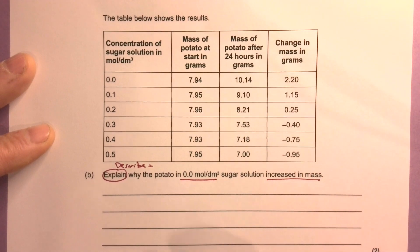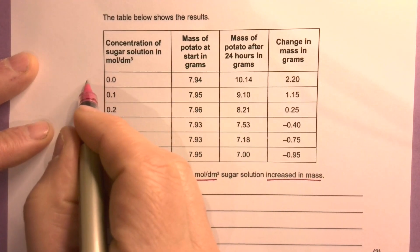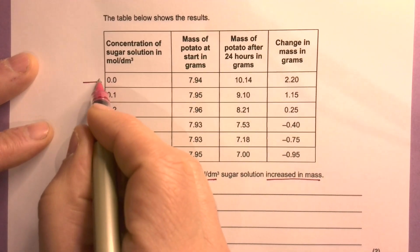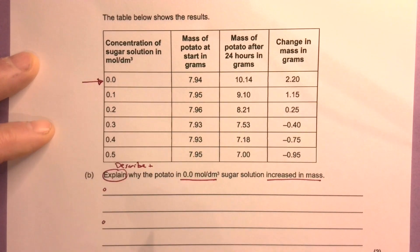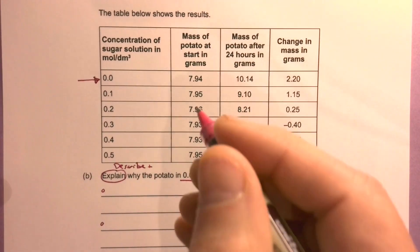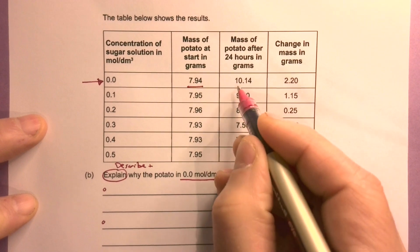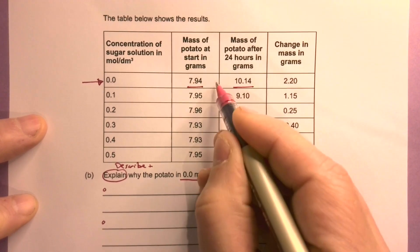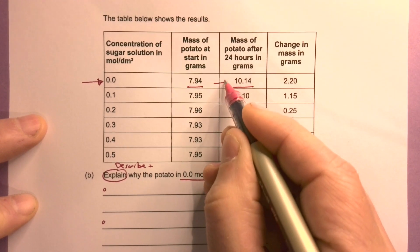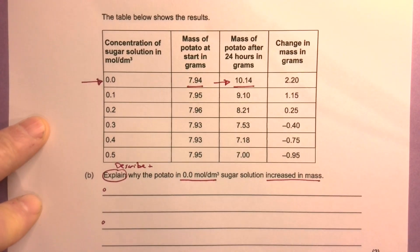It's worth two marks — describe what happens and say why that is. So this one here: it started at a certain mass and it went up all the way to 10.14 grams.